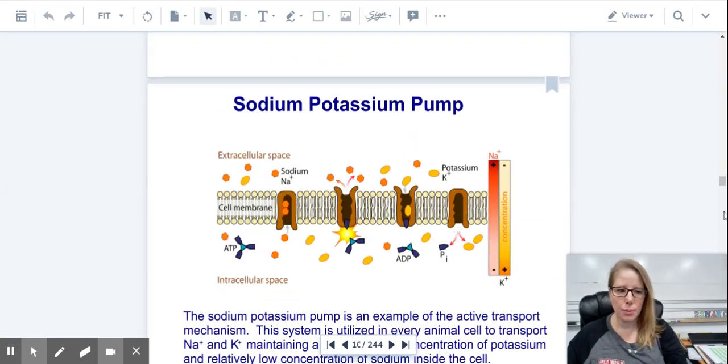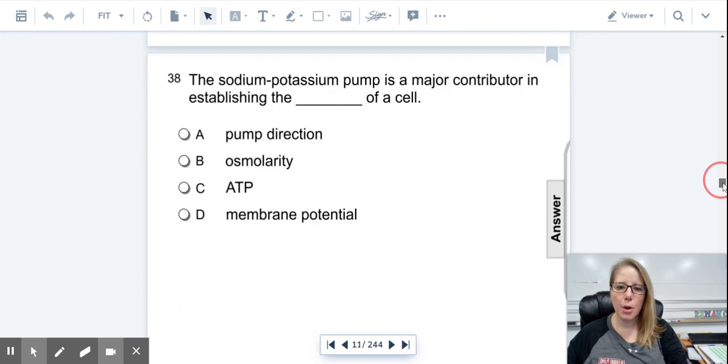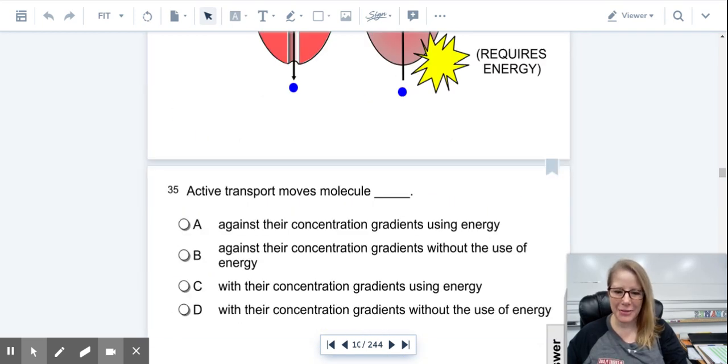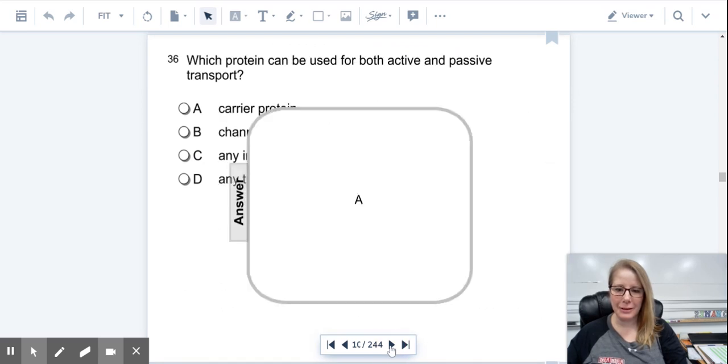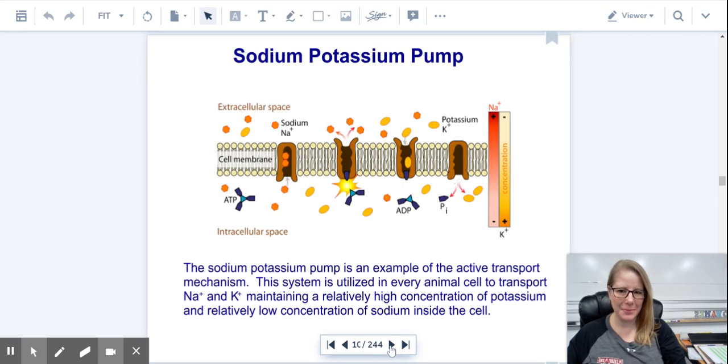We are going to move on to the sodium-potassium pump, which is a specific kind of active transport. The sodium-potassium pump is arguably the most important active transport pump in our body. This is used in every animal cell to transport sodium and potassium to make sure that there's a high concentration of potassium and a low concentration of sodium in the cell. There's more sodium extracellularly, so it's constantly being pumped out and needs energy for that.